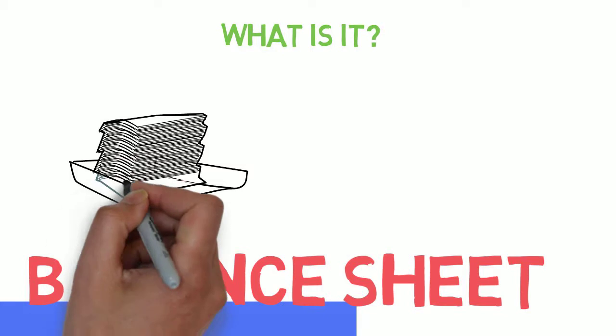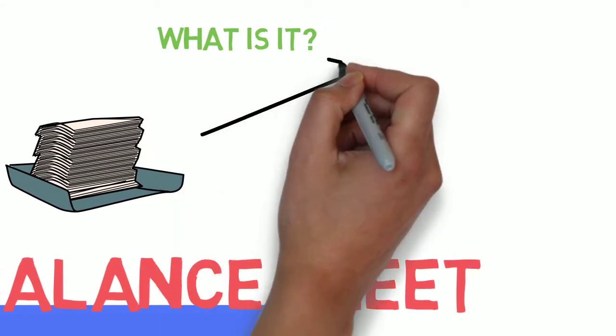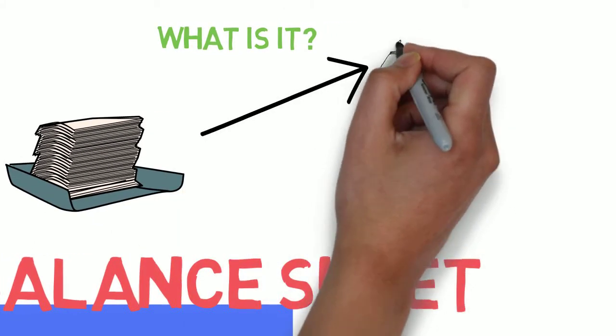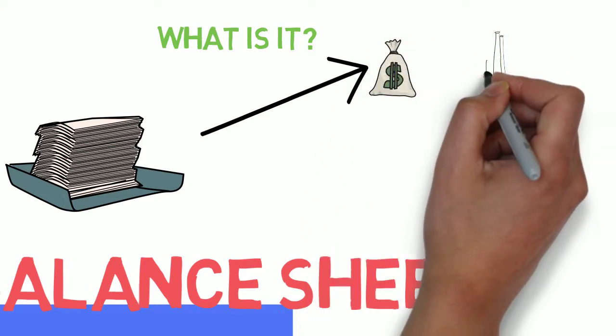So the balance sheet is a financial statement that takes into account three different parts which are assets, liabilities, and shareholders' equity.